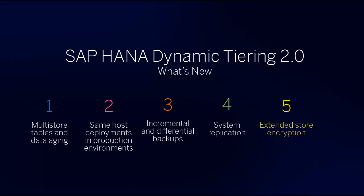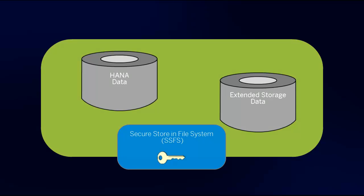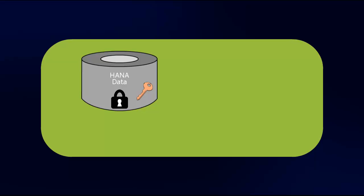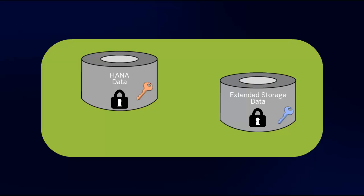The final feature is encrypting extended storage. Dynamic Tiering uses the same encryption root key as SAP HANA, though the HANA and extended stores each have their own database page encryption keys. This allows the encryption of your entire HANA database for improved security. If your HANA database is already encrypted, the extended store is automatically encrypted when you create it. But it is also possible to encrypt an existing extended store.